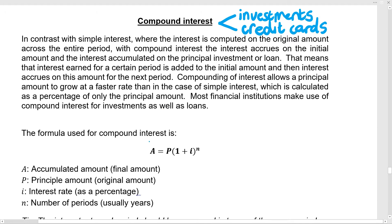Compound interest is going to grow exponentially. You've come across exponents before and you probably know that exponents can make things a lot bigger than what they started out being. In this formula, n is the exponent — so really, time is money. This is the time, and you're going to raise all of this to the power of how much time you invested for.